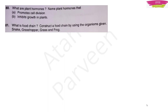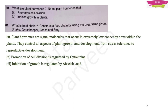Question 80: What are plant hormones? Name plant hormones that promote cell division and inhibit growth. Plant hormones are signal molecules occurring in extremely low concentrations within plants, controlling all aspects of plant growth and development. Cell division is promoted by cytokinins. Inhibition of growth is regulated by abscisic acid.